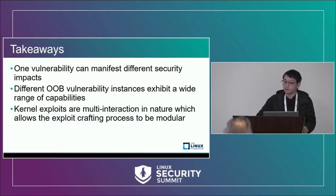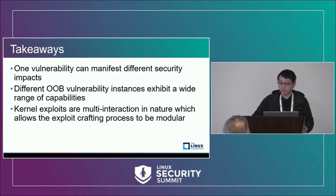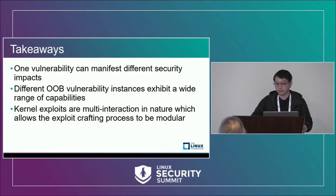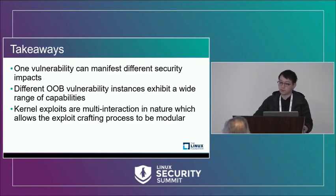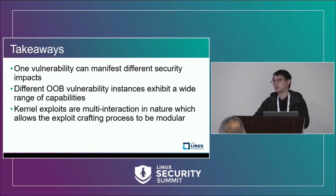Some takeaways. First, one vulnerability can manifest different security impacts, and fuzzing can be a good strategy to expose them. Second, different out-of-bound vulnerabilities exhibit a wide range of capabilities, and it's necessary to have formal modeling. Lastly, kernel exploits are multi-interaction in nature, which allows the exploit crafting process to be modular. Although in this work we only focus on OB-Write, the principle of separating capability summarization from exploitability evaluation can also be applied to other types of vulnerabilities, such as use-after-free and double-free.